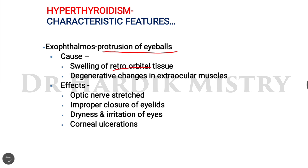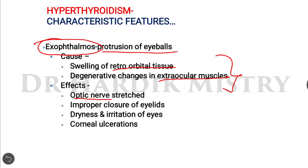Hyperglycemia is also a characteristic feature of hyperthyroidism. Exophthalmos — protrusion of the eyeballs — occurs due to swelling of retro-orbital tissues and degenerative changes in the extra-ocular muscles. Effects of exophthalmos include stretching of the optic nerve, improper closure of the eyelids, dryness and irritation of the eyes, and corneal ulcerations.